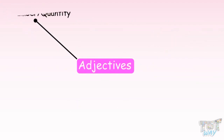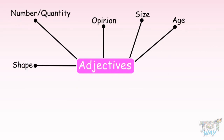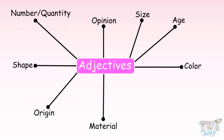Adjectives may tell us about the number or quantity, opinion, size, age, shape, color, origin, material, or purpose of the noun or pronoun. Let's see different adjectives that describe different characteristics of a noun or pronoun.